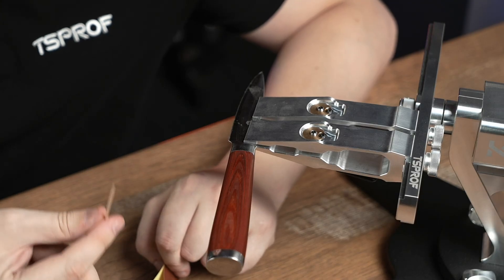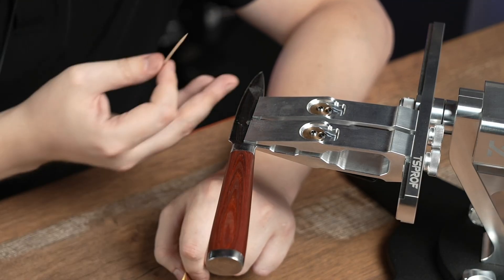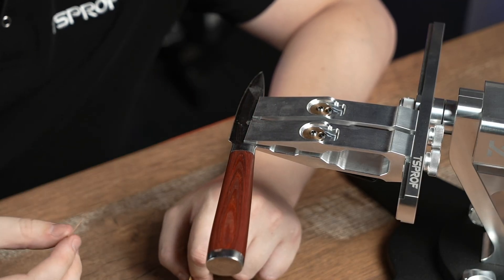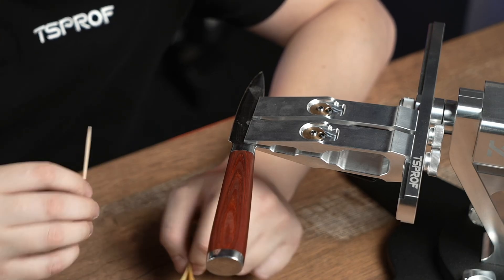Some people use a bamboo stick or a toothpick. When people run it along the edge they usually remove the visible part of the burr but they tear off both the visible part and part of the cutting edge. They don't remove the root of the burr.